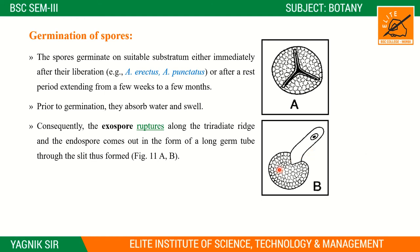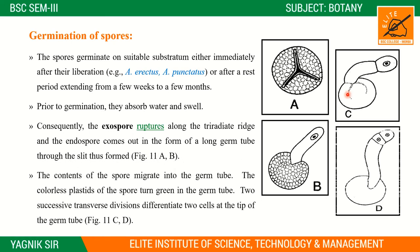The contents of the spore migrate into the germ tube. The colorless plastids of the spore turn green in color. Two successive transverse divisions differentiate the germ tube into two cells at the tip.